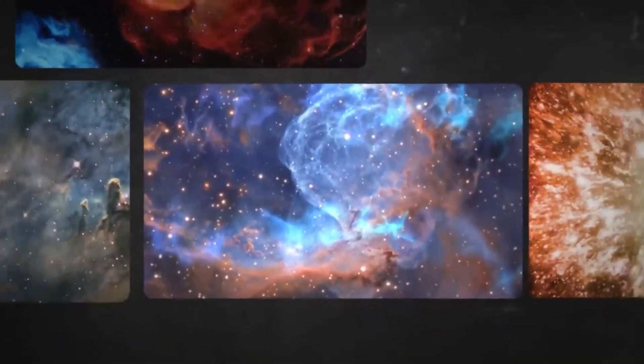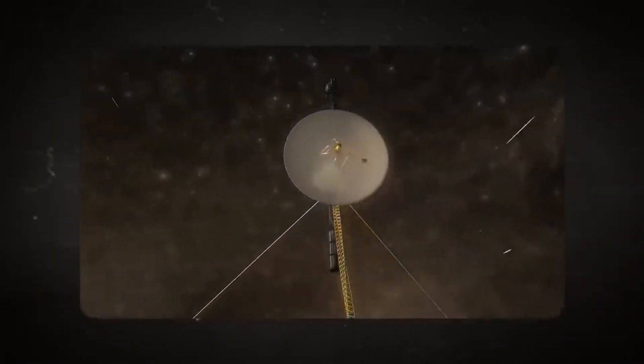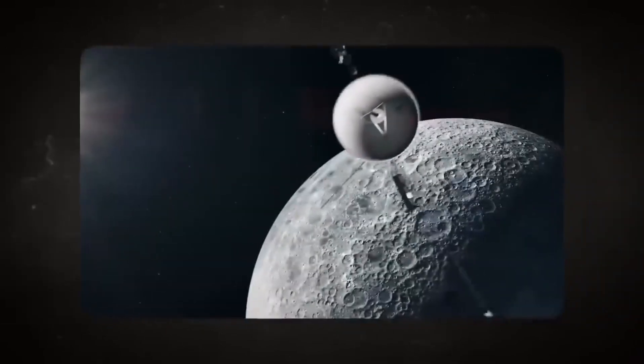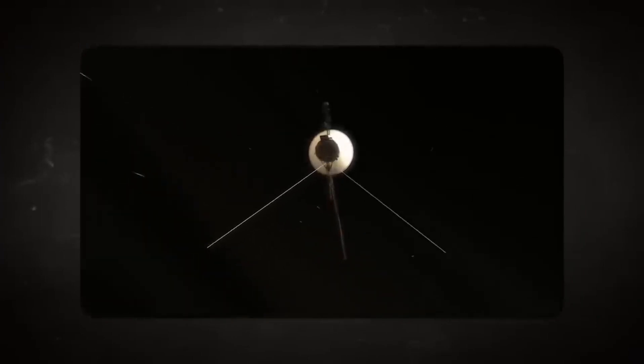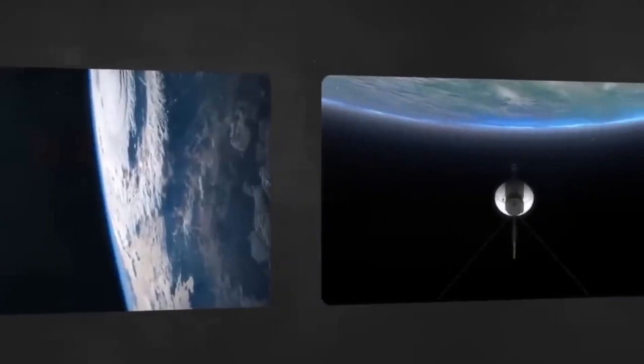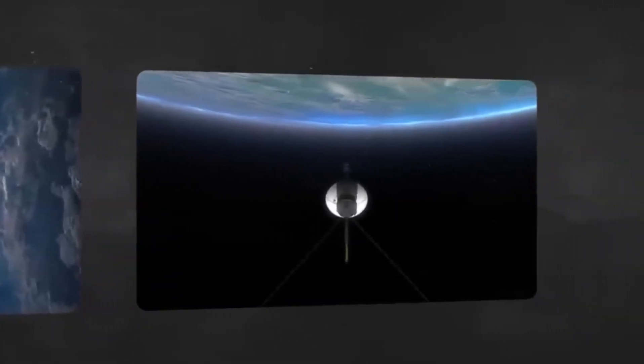Voyager 1's longevity is partly due to modifications made to conserve power. Non-essential systems like cameras were shut down to minimize power consumption. The last photo from Voyager 1, showing Earth as a tiny dot in the vast universe, offers a perspective of our planet's insignificance in the cosmos.